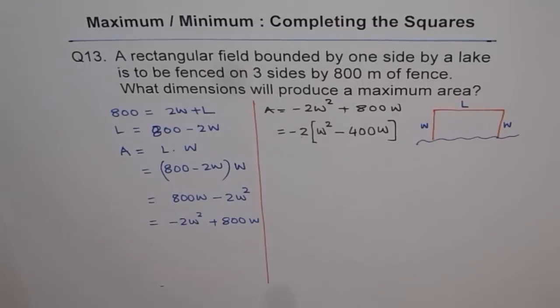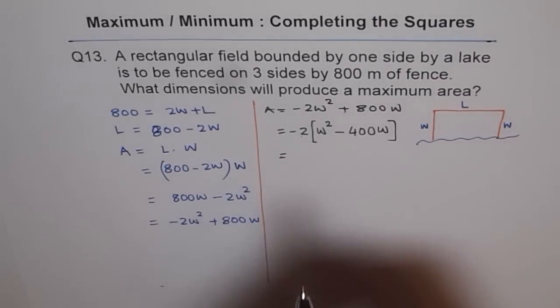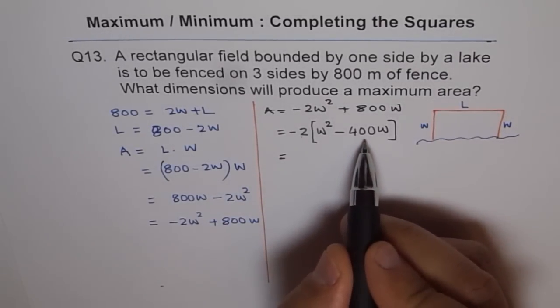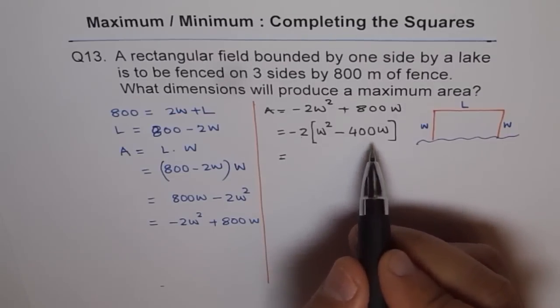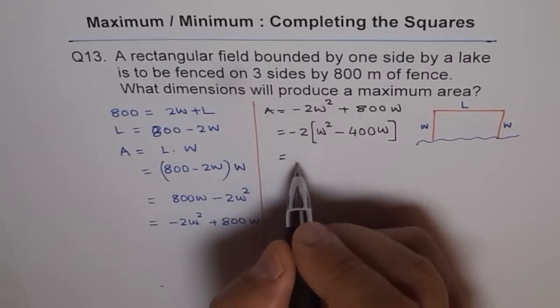Don't factor W out. Some students do that mistake and then they think what happened. Now second step is, do half of this which is 200, square is 200 square, add and subtract that term. So we'll do this.